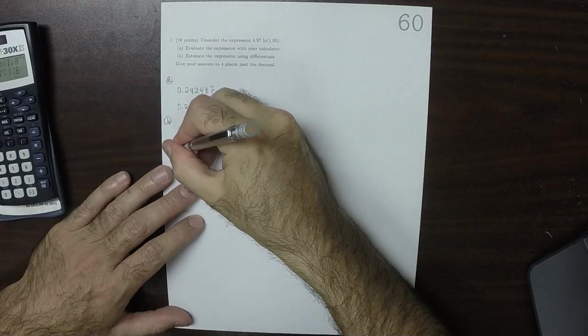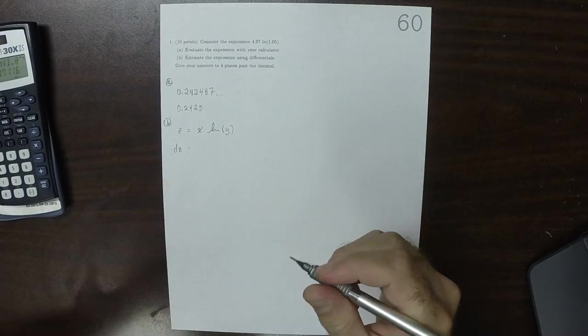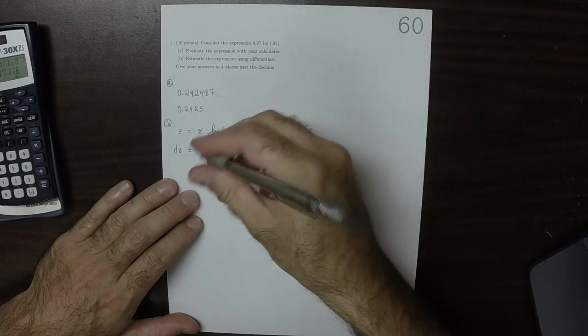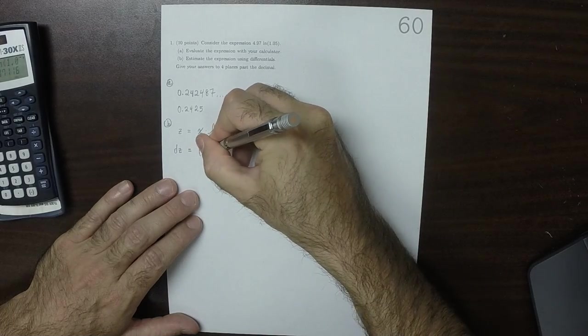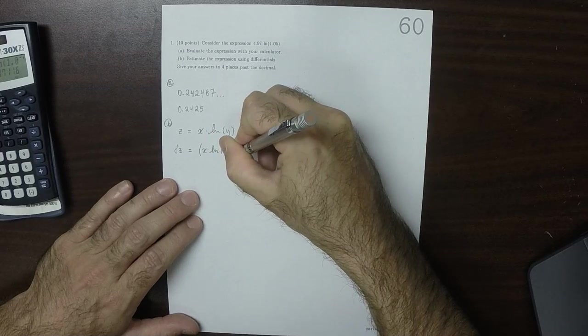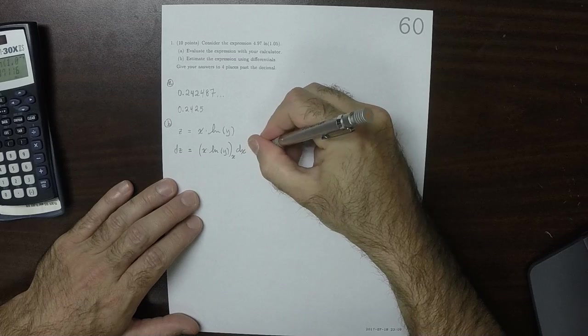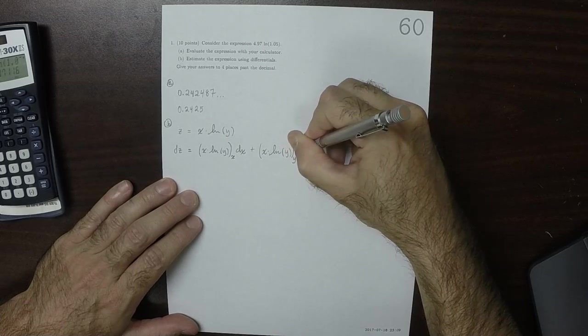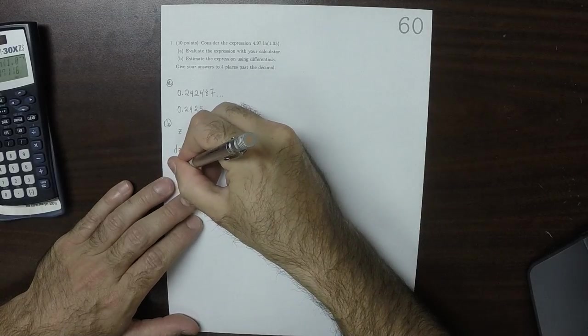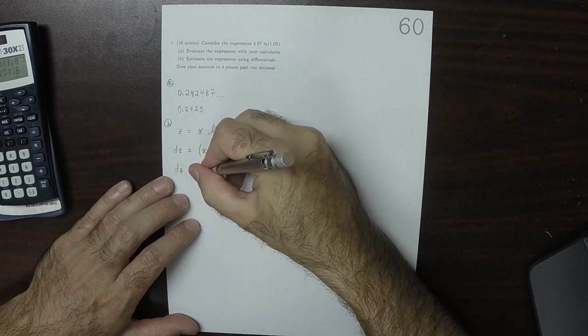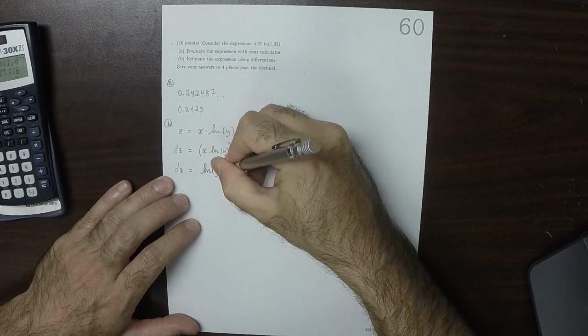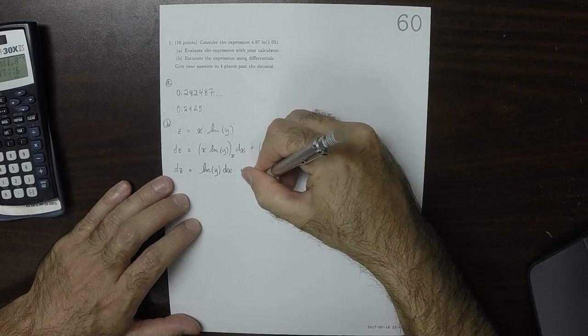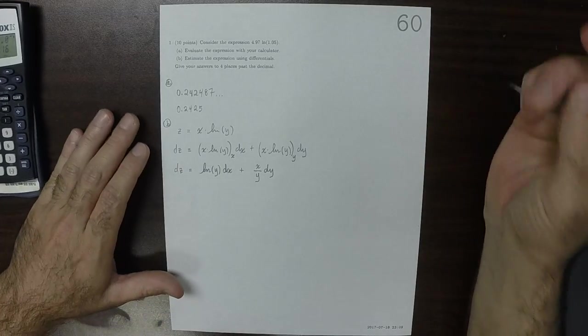Then the differential is dz is equal to this thing, x log y, the x partial of that, dx, and then plus this thing, x log y. So dz is the natural log of y dx plus x over y dy. So that's the differential.